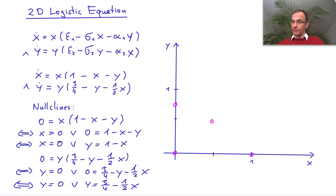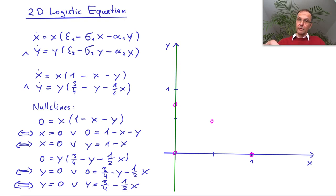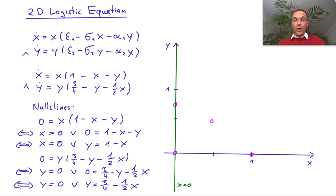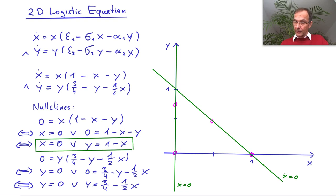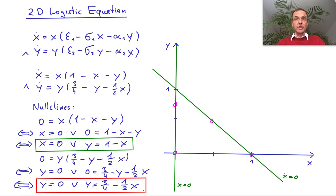Now let me draw the x nullclines. The first means x is zero, which means we are simply on the y-axis, and we know that x dot equals zero on this nullcline. The other nullcline starts at one for x equals zero, and then it goes down with a slope of one. Those were the two x nullclines. Now let us draw the y nullclines. The first one is just y equals zero, which means we are on the x-axis.